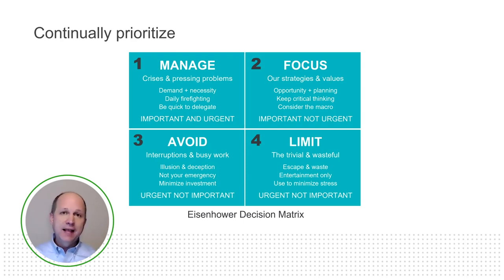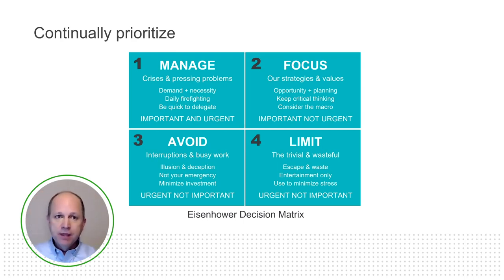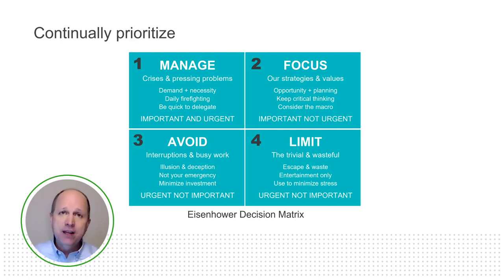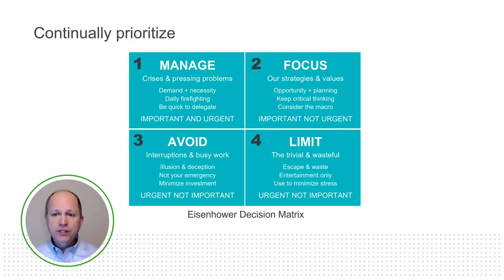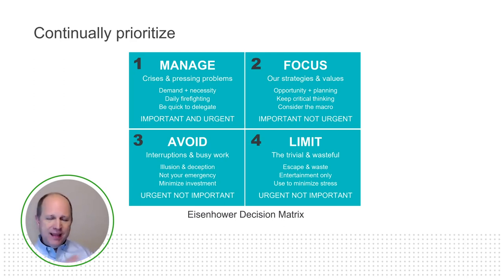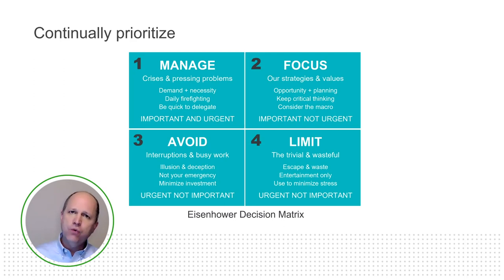Then we've got continually prioritize. Everybody here has seen the Eisenhower matrix, so I'm not going to break it all down. It's taught in a lot of different places. In this, you have quadrant one — important and urgent — which gets most of our attention. But the problem is quadrant two tends to be ignored. And that's kind of the theme behind the entire presentation today: we ignore quadrant two in favor of quadrant one.